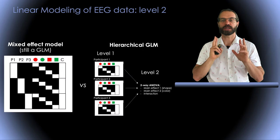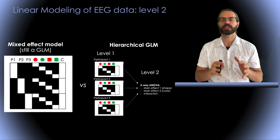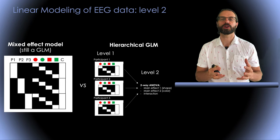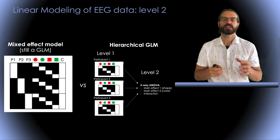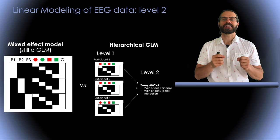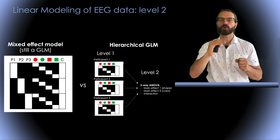Finally, and this is my last slide, why do a complex two-level hierarchical GLM model, when we could use a simpler mixed effect model where we model the different participants using additional beta parameters. So this is represented here on the left. You can see that now I have a design matrix that represents all the trials from all the participants.